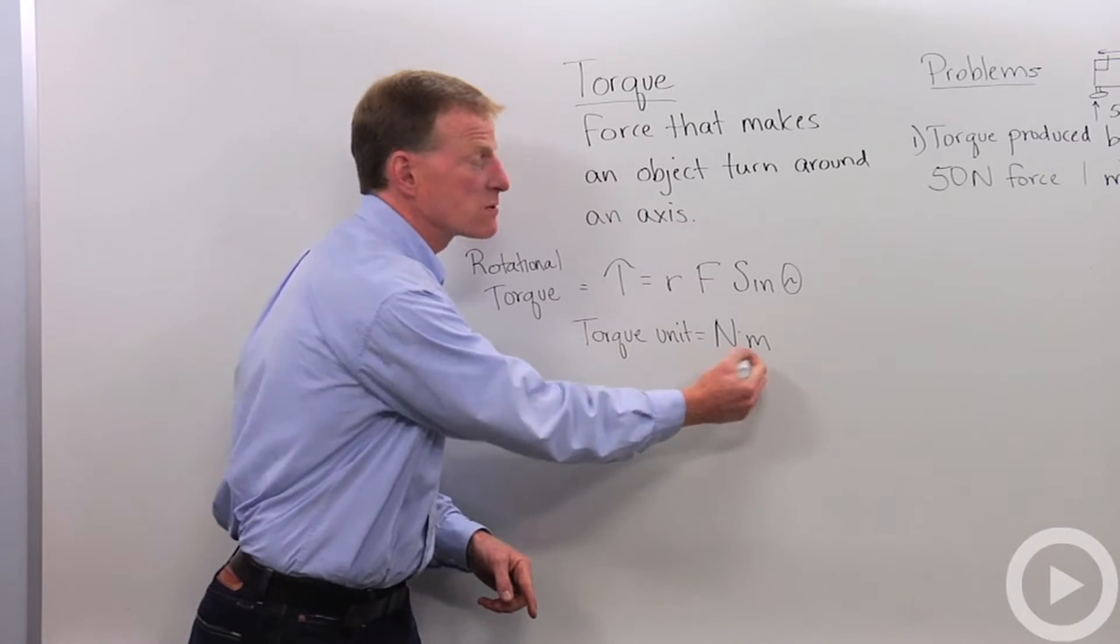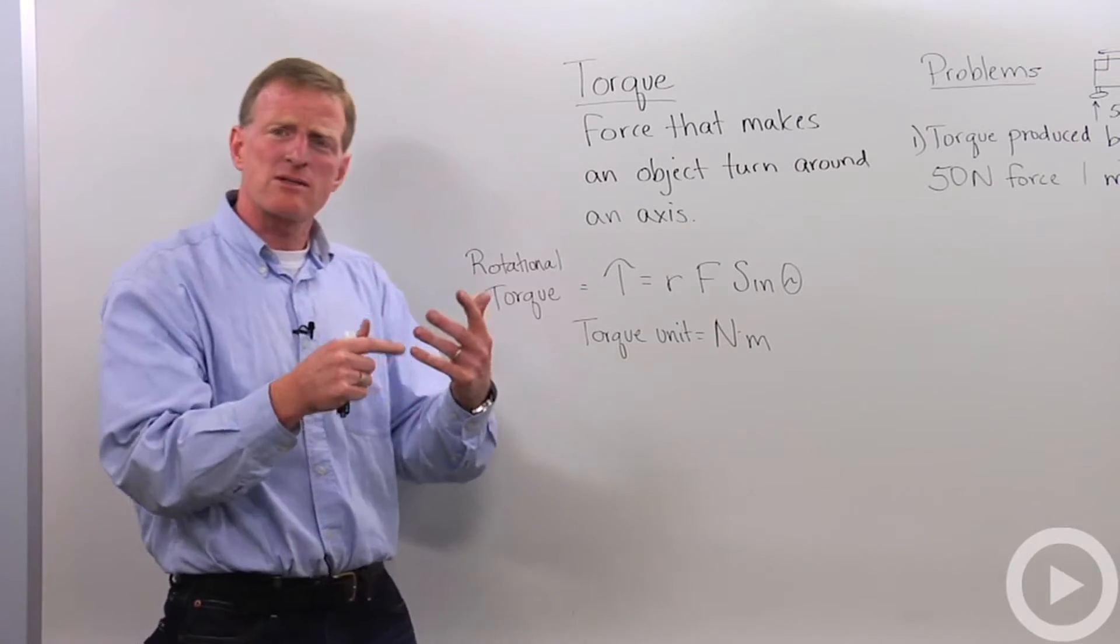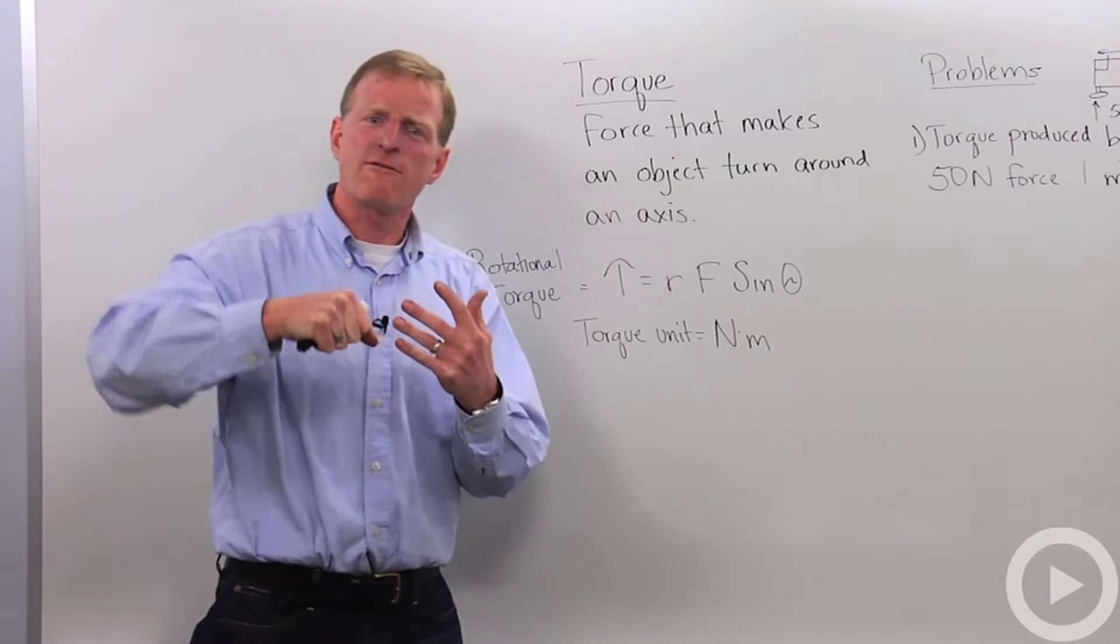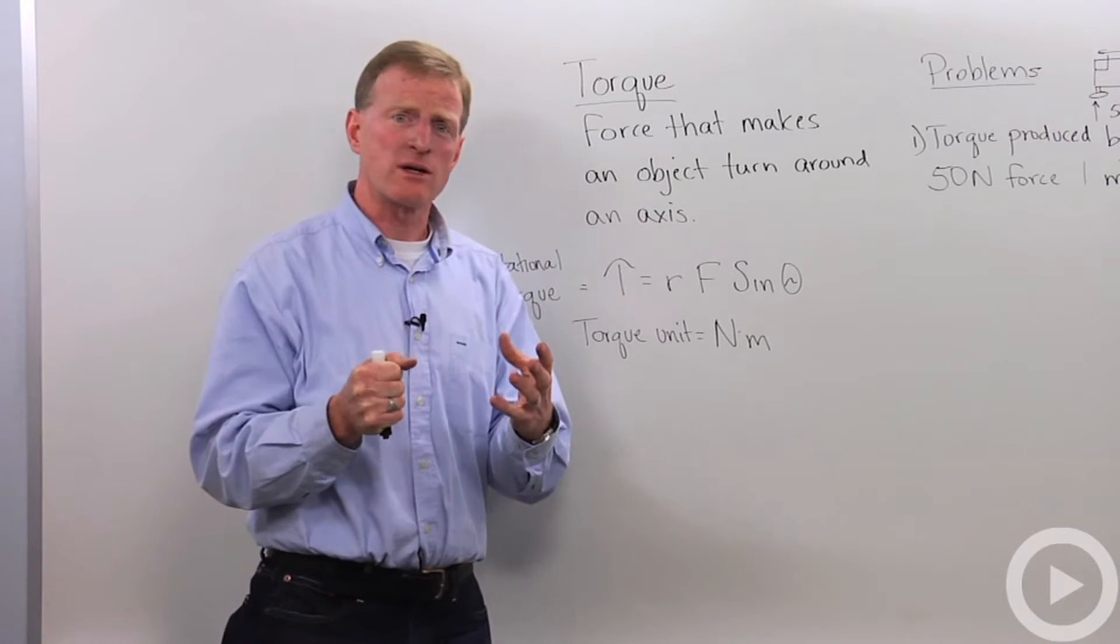So the unit we use for torque is newtons per meter. Now let's look at how we could solve for that rotational torque, that force that we use to move things around an axis.